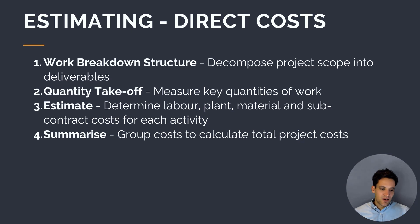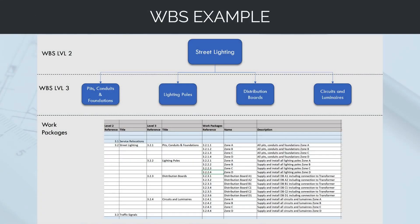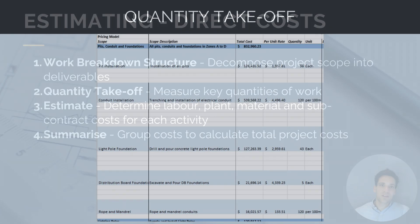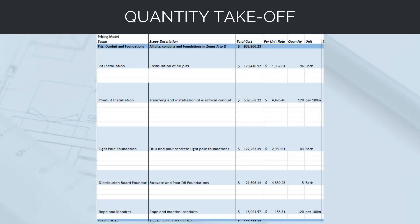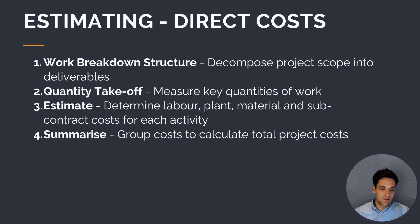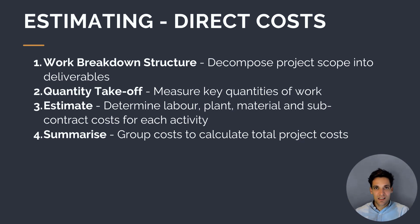The first step in calculating our direct costs is to set up a work breakdown structure — we need to decompose the project scope into component pieces and create a list of every single activity we need to complete. We then complete a quantity takeoff: for each activity, what are the key quantities we need to know? For example, for pouring a concrete foundation, we'll need to know how many square meters of formwork, how much reinforcement, the total volume of concrete, and the area of the slab. Once we've worked out the quantities against each activity, we estimate the cost — determining the plant, labor, materials, and subcontract costs — and combine them all together.